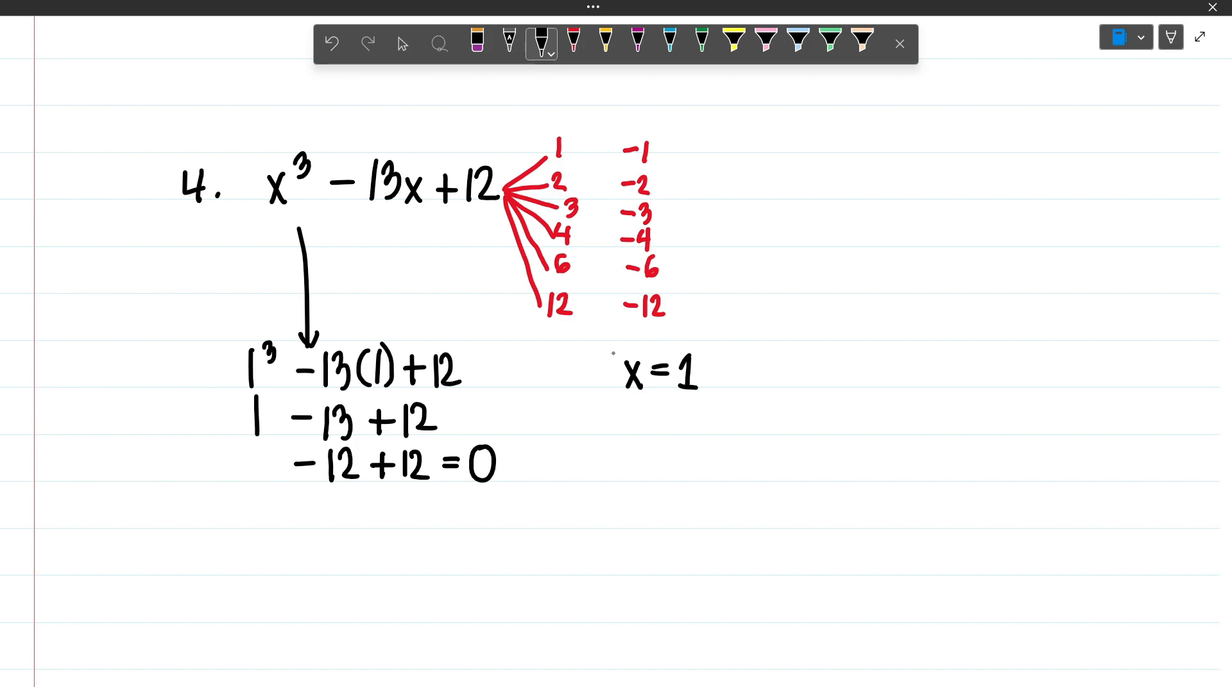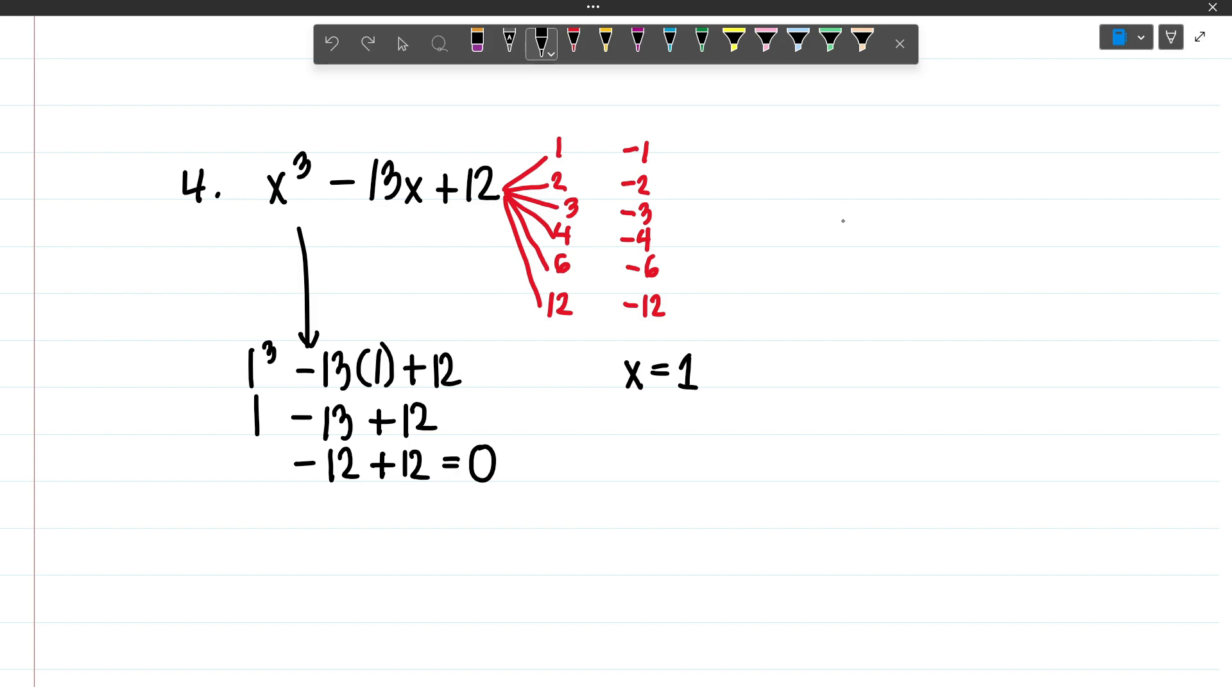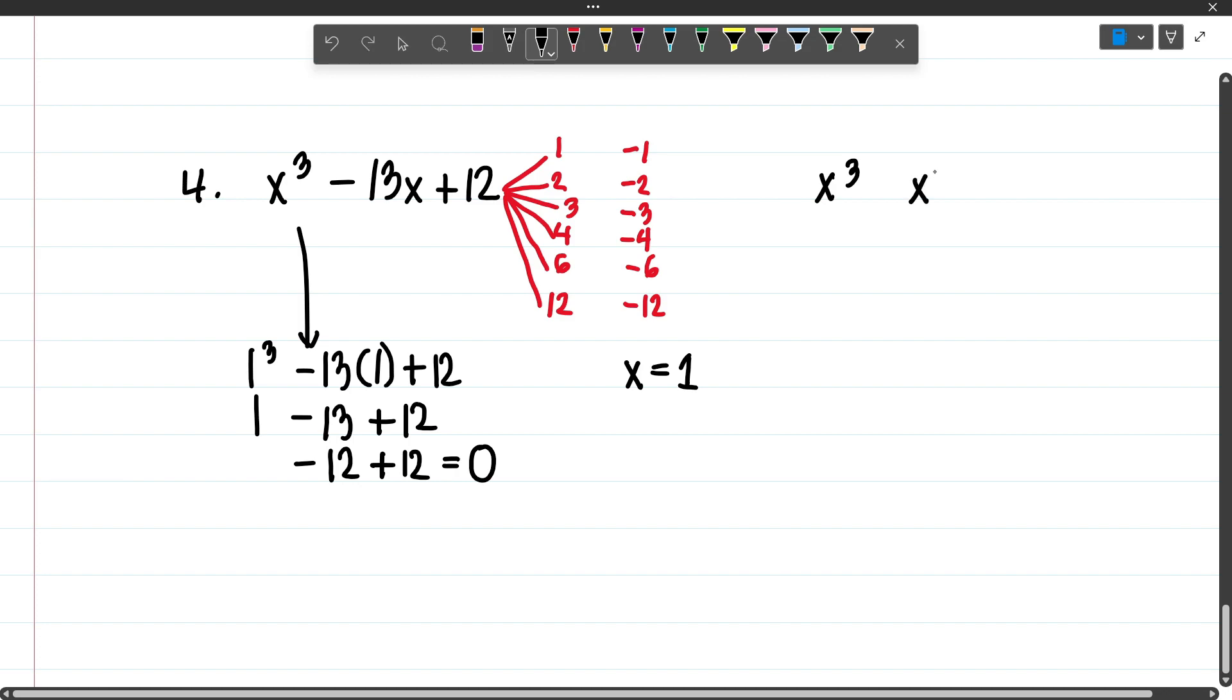Now we can use synthetic division to find the other factors. Using x equals 1, we can apply synthetic division. To perform synthetic division, the first thing we have to do is write the highest root in decreasing order. So x cubed, next is x squared, next is x, and next is your constant.